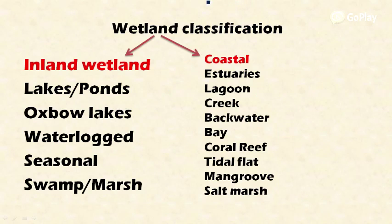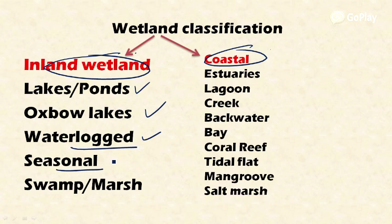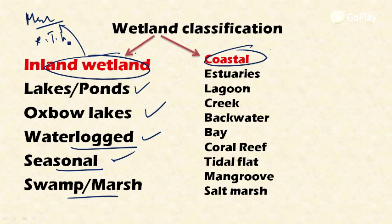In the broadest terms, wetlands are classified into inland wetlands — that is, freshwater wetlands — and coastal wetlands. Inland wetlands include lakes, ponds, oxbow lakes, waterlogged soils, seasonal wetlands, swamps, and marshes. Man-made inland wetlands include reservoirs, tanks, waterlogged soils like paddy fields, and ash ponds.